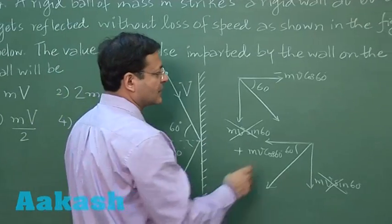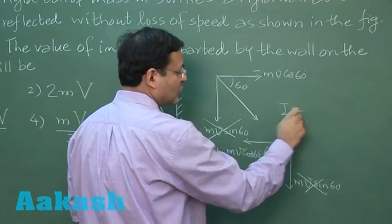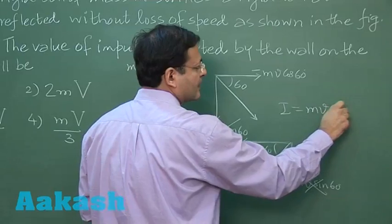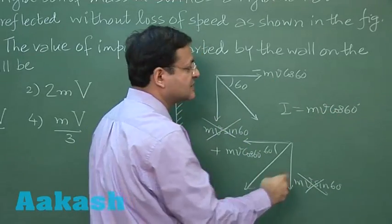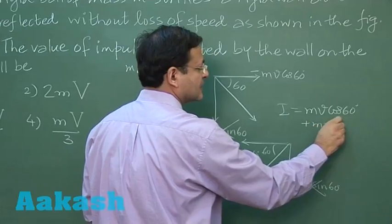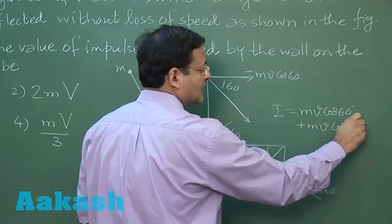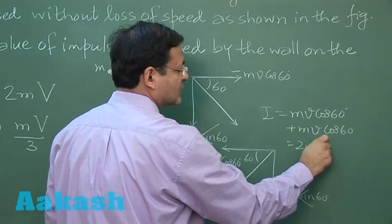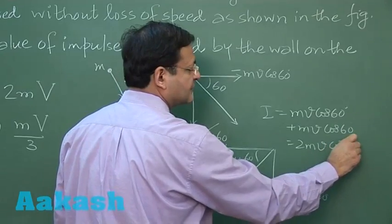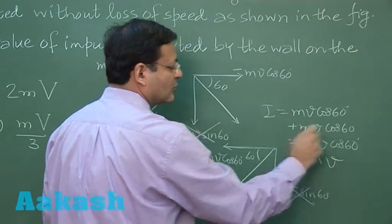So the impulse imparted will be M v cos 60 minus minus of M v cos 60, that is plus M v cos 60 to 2 M v cos 60. Cos 60 is how much? Cos 60 is half. So in total the value comes out to be M v.